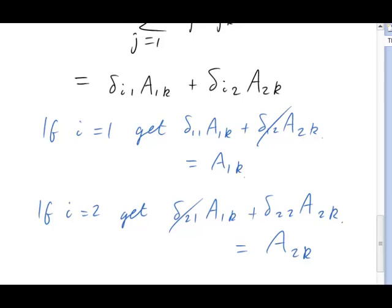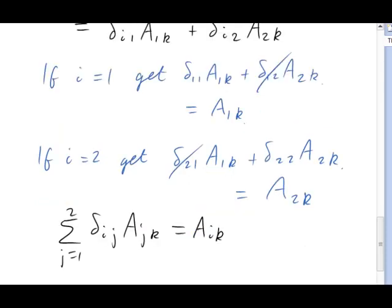So we can now write down what our sum equals in general. It equals Aik. What we've discovered here is a rather fancy way of doing matrix multiplication. Once again, the delta here has had the effect of changing the j on the A into an i. The summed index j gets replaced with the index that is not summed on the delta. The result here, again, shouldn't be a surprise because, after all, i2 times the matrix A is the matrix A again.